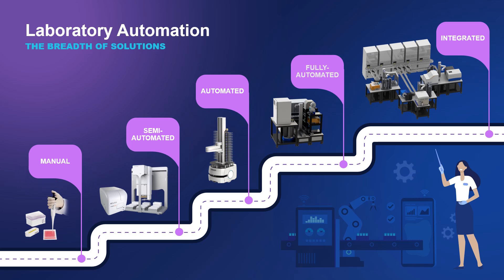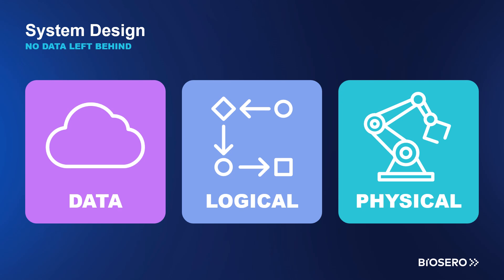The scale of these systems varies very significantly, but when we design and build them, we can break all of them down into three common components: the data design, the logical design and the physical design. System design encompasses the creation of a thorough blueprint detailing the system's different components, its architecture and its interactions with other systems. An effective system design guarantees that the final system will fulfill all specified requirements, including performance, maintainability and scalability.